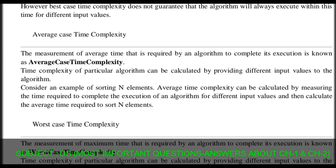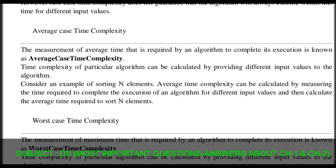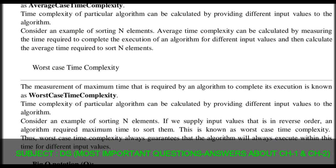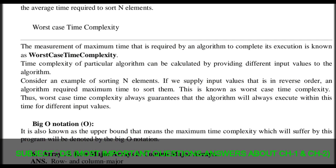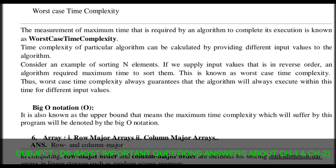Average case time complexity is the measurement of average time that is required by an algorithm to complete its execution. The time complexity of a particular algorithm can be calculated by providing different input values to the algorithm. Consider the example of sorting elements — average case time complexity can be calculated by measuring the time required for different input values and then calculating the average time required to sort an element.